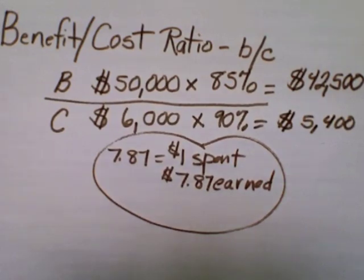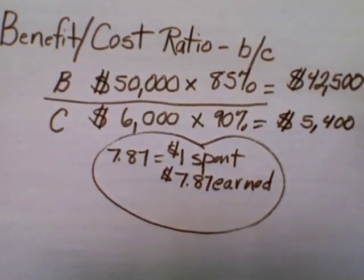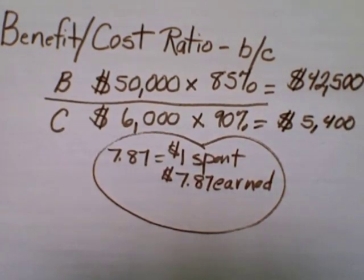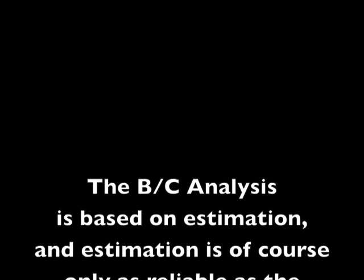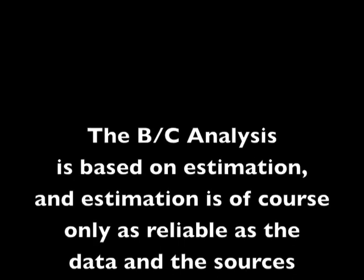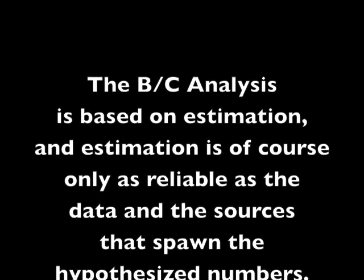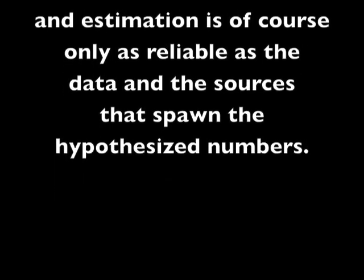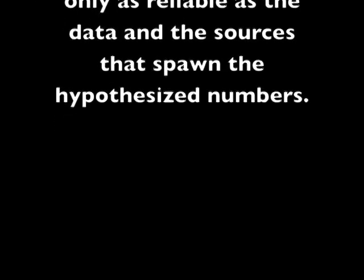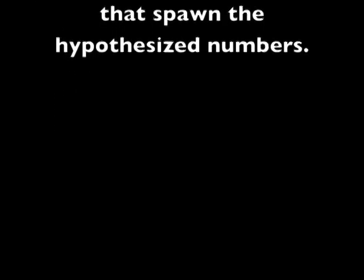The BC ratio is a quantitative estimate that helps us quickly see if our decision was sound or if our decision was folly. You'll quickly realize that the BC analysis is based on estimation, and estimation is, of course, only as reliable as the data and the sources that spawn the hypothesized numbers. Use the BC analysis as a back-of-envelope informal means of checking out a decision's wisdom.